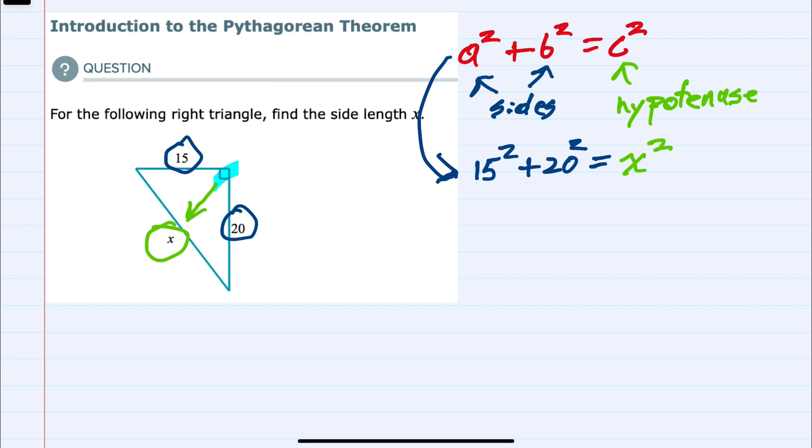Now we've substituted into the Pythagorean Theorem equation. Since we're looking for the length of x, on the left-hand side of this equation I can go ahead and square 15.